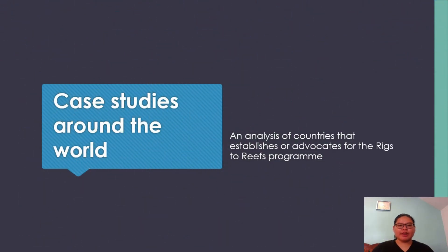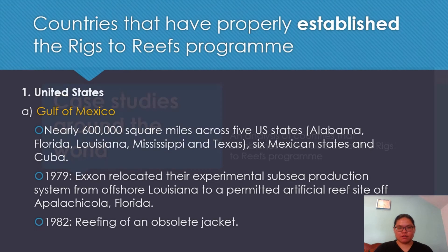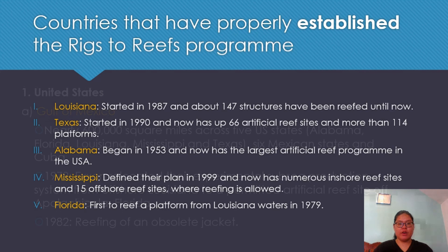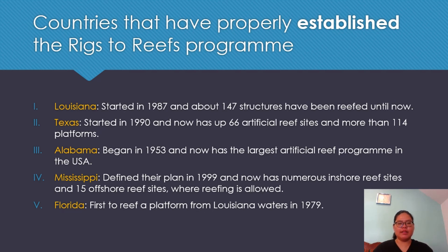Now let's look at an analysis of countries that establish or advocate for rigs-to-reef programs. For countries that have properly established the program, there are a few. Firstly, the United States, specifically in the Gulf of Mexico. There are five states that actively implement this program, including Louisiana starting as early as 1987, Texas starting as early as 1990, Alabama starting as early as 1953, Mississippi, and Florida.